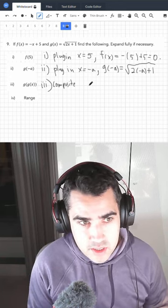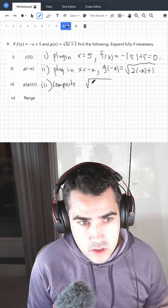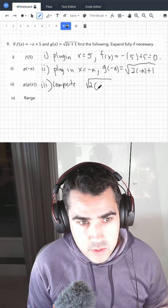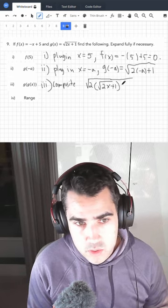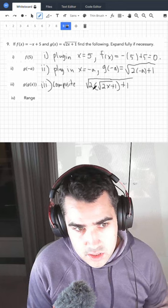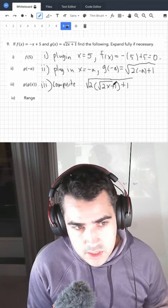So what is g of x? It is a square root of 2. And then here we're going to put in g of x itself, square root 2x plus 1. And now we do plus 1. So you see this is the outer function and here is the inner function.